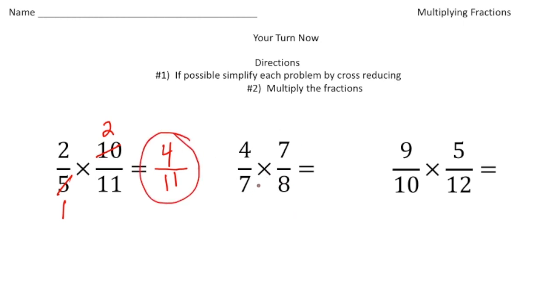The second problem, we have 4/7 times 7/8. We can actually cross reduce twice here. 7 and 7 can become ones, because 7 goes into both numbers. And then 4 and 8, the greatest common factor of 4 and 8 is 4. So 4 goes into 4 once and 4 goes into 8 twice. Now we can multiply. 1 times 1 is 1, and 1 times 2 is 2. Our answer is one half.